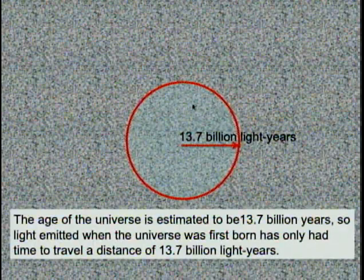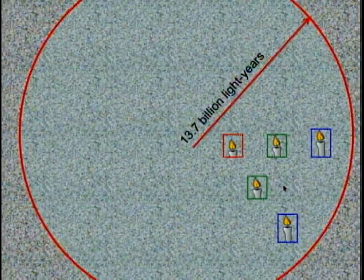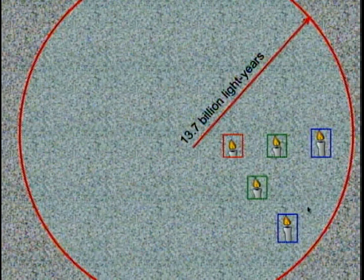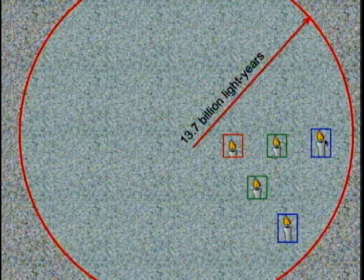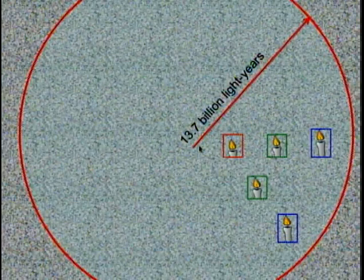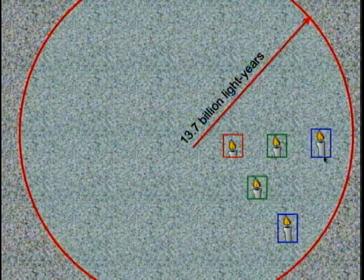This is the size of the observable universe. If we look at it in detail, you'll also realize that the objects that are further away from us — these blue candles here — we are detecting the light today that was emitted when those objects were very young. Light has been traveling almost the entire age of the universe in order to reach us here, today.